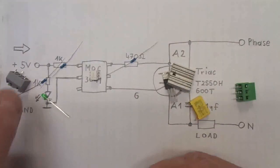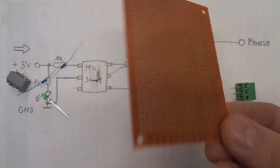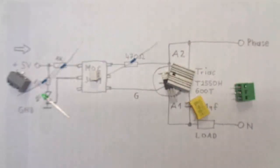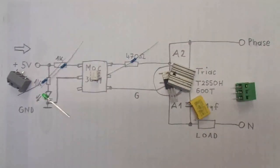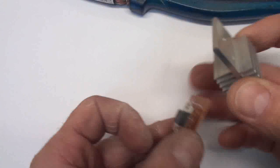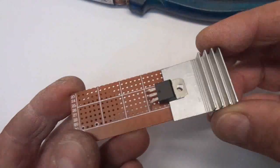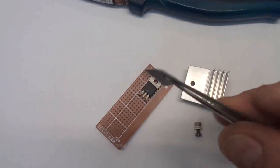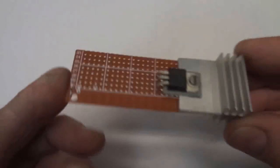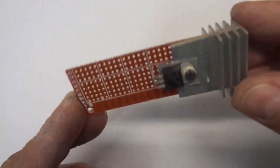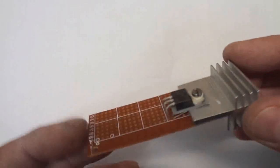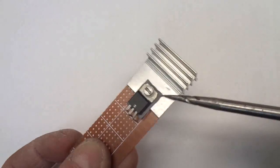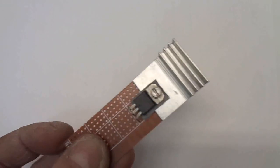And of course you need a piece of perf board. That's all you need. So here is the triac on its heatsink. Here is the triac with an isolation silicon pad in between.